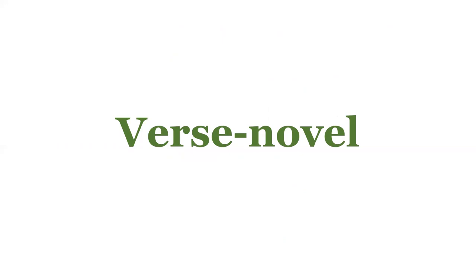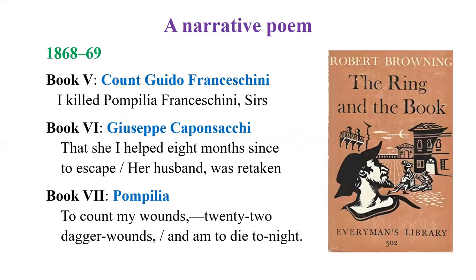Now let's go to the verse novel — generally a novel is written in prose, but verse novels are written in the form of poetry. A famous example is the Victorian poet Robert Browning, known for dramatic monologues, who wrote the lengthy verse novel The Ring and the Book. It is also a kind of historical novel based on a court murder trial in Italy. The beauty of this novel is that it has 12 books, each from a different perspective — each book is a kind of dramatic monologue. It was published between 1868 and 1869.